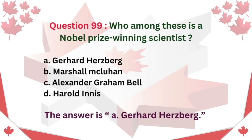Question 99. Who among these is a Nobel Prize-winning scientist? A. Gerhard Herzberg B. Marshall McLuhan C. Alexander Graham Bell D. Harold Innes. The answer is A. Gerhard Herzberg.